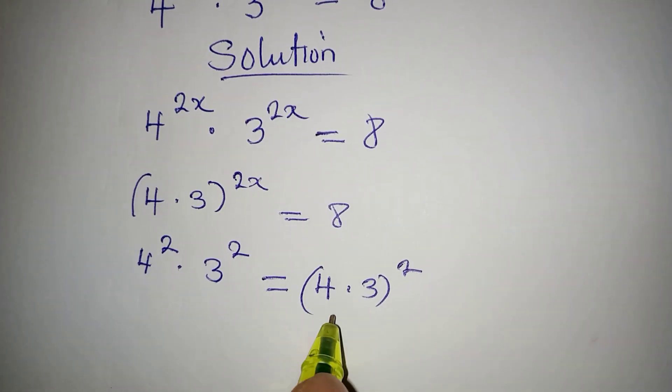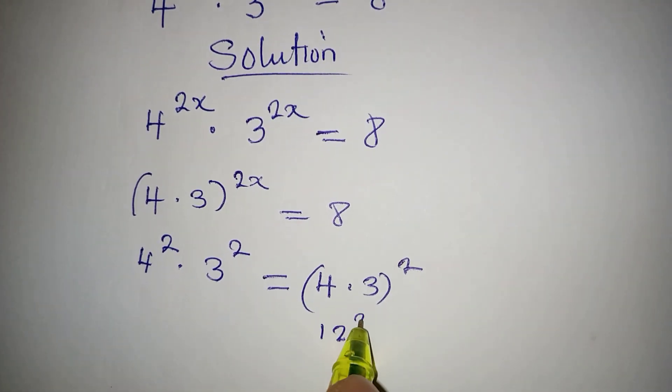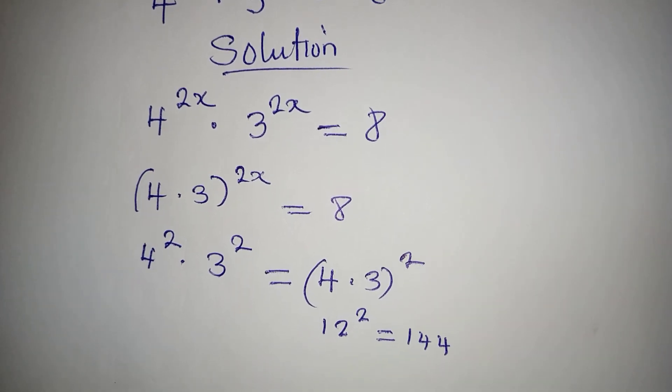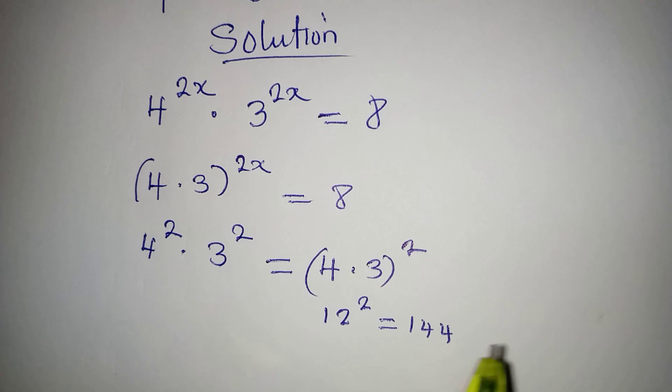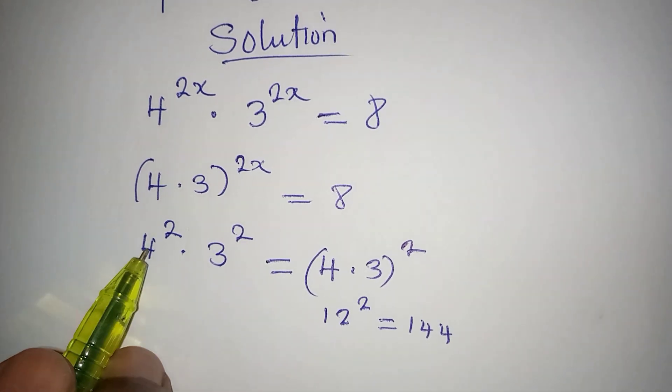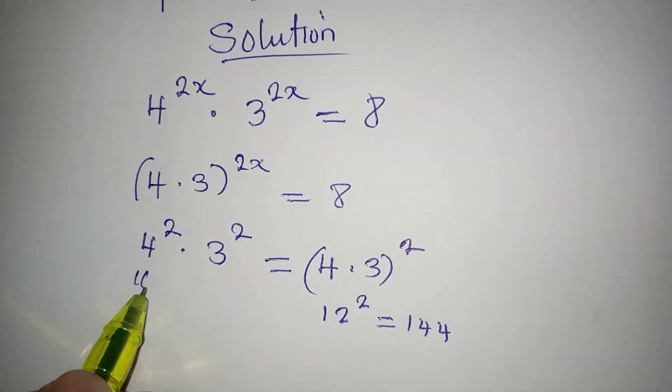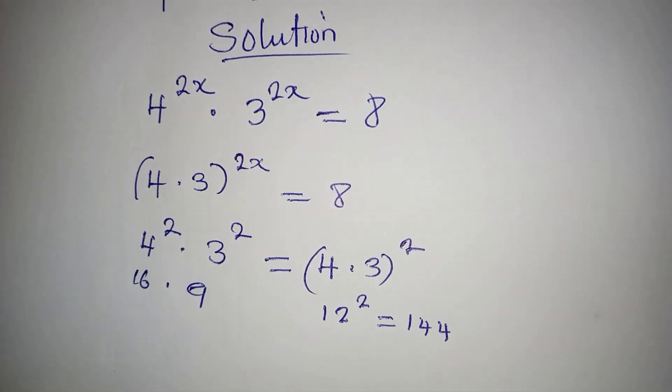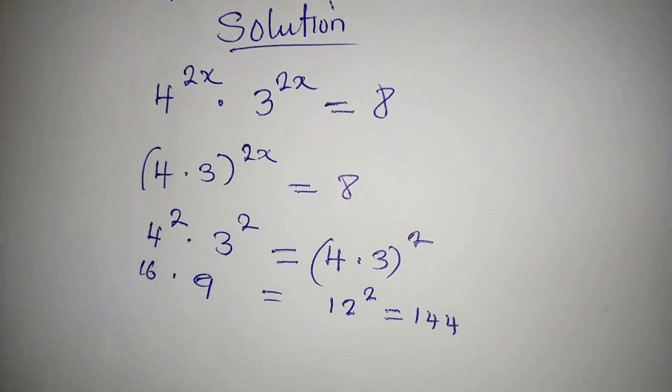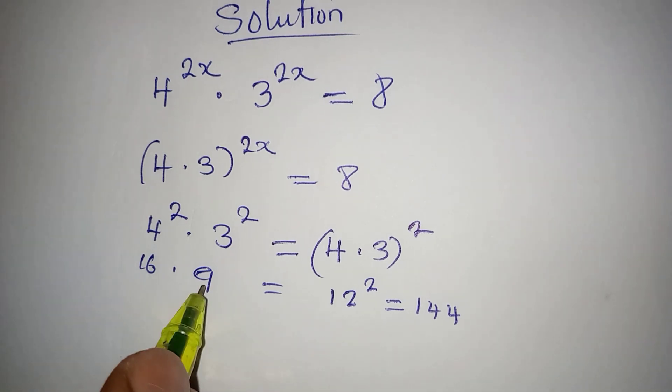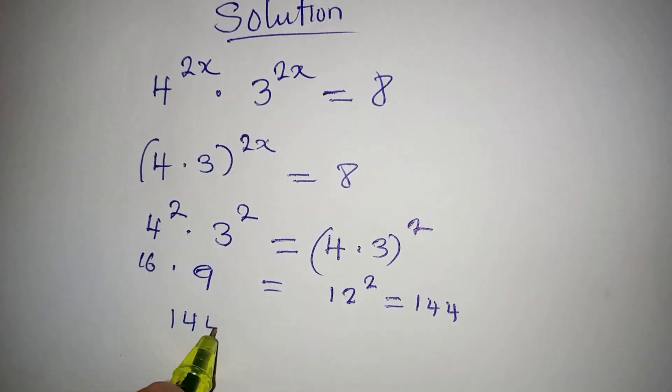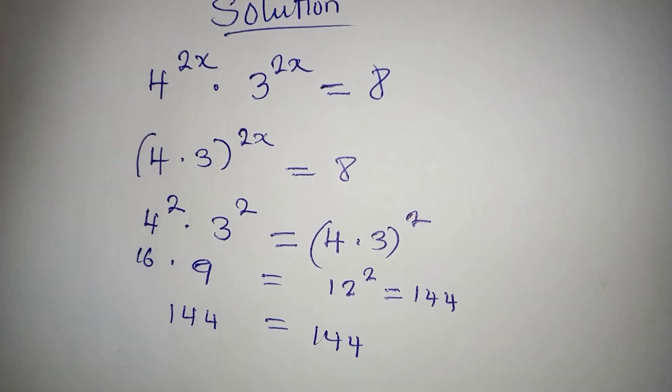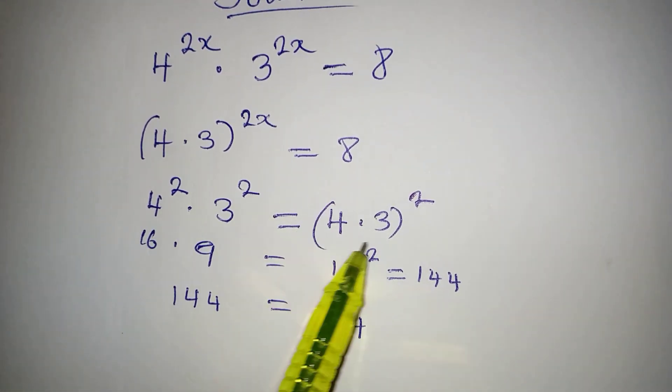This means we'll be having 12 to the power of 2, which gives us 144. If I don't want to do it this way, it's going to be 4 to the power of 2, which is 16, multiplied by 3 to the power of 2, which is 9. 16 times 9 gives us 144. This confirms that the step is correct.